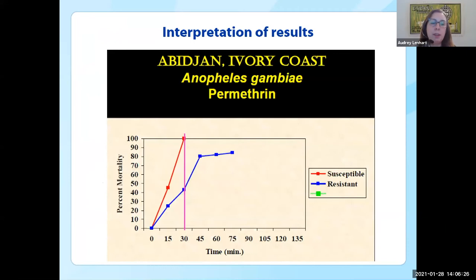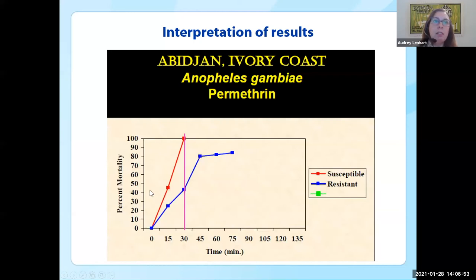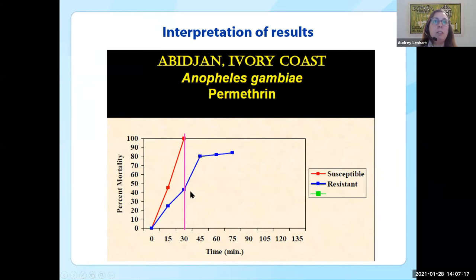As an example of real-life data, these are Anopheles gambiae from Côte d'Ivoire exposed to permethrin. For permethrin, the diagnostic time is 30 minutes. At 30 minutes, the susceptible strain had 100% mortality, which is what you would expect. But at 30 minutes, the resistant field strain only had about 45% mortality. At 45 minutes it was about 80%, and at 60 to 75 minutes it wasn't really progressing much further. In this particular case the assay was stopped at that point because it was clearly resistant. The key data point we're most interested in is the percent mortality at the diagnostic time.